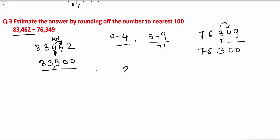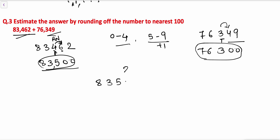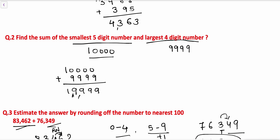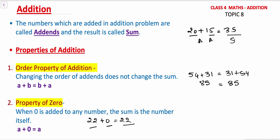So now, number one and number two have been rounded off to the nearest hundred. Now we have to do the addition: 83500 plus 76300. Adding the digits: 0 plus 0 is 0, 0 plus 0 is 0, 5 plus 3 is 8, 3 plus 6 is 9, 8 plus 7 is 15. So the answer is 159800.